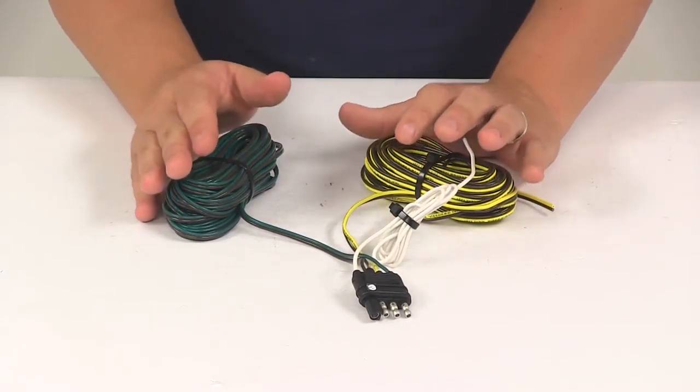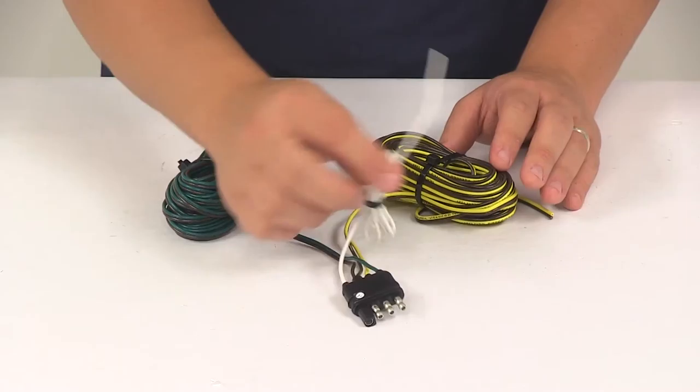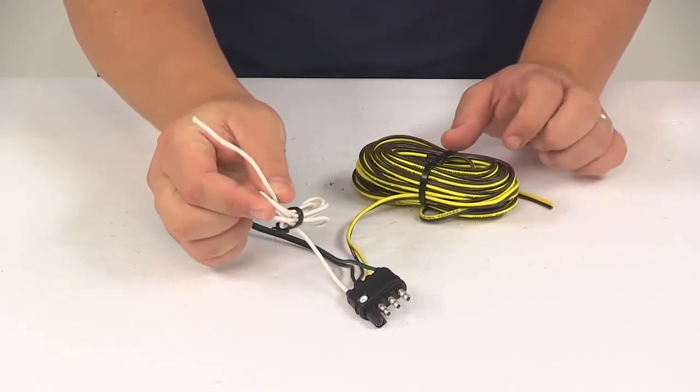The entire length of the harness is going to measure 30 feet long, and then the length of the ground wire right here is going to measure 36 inches long.